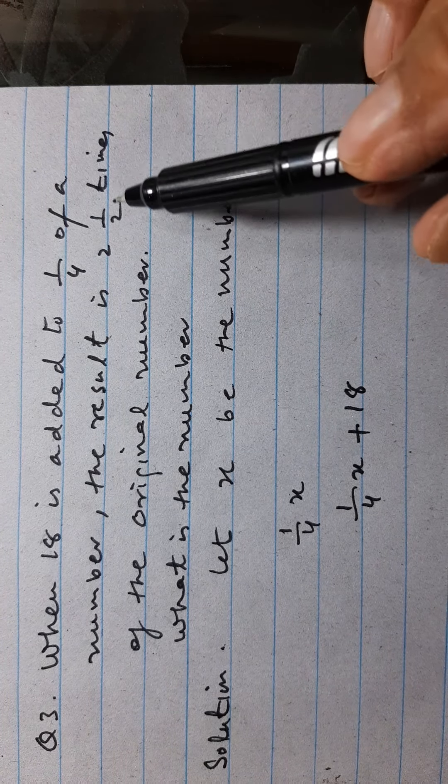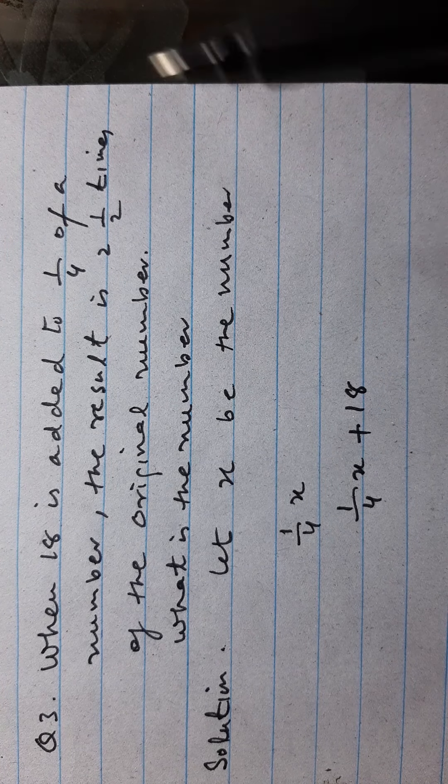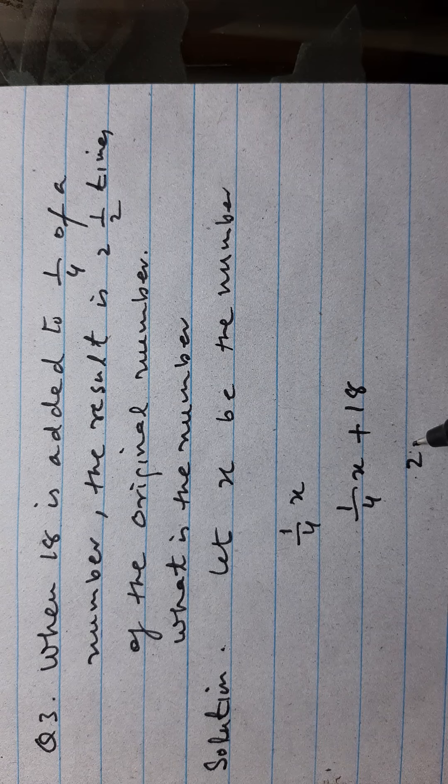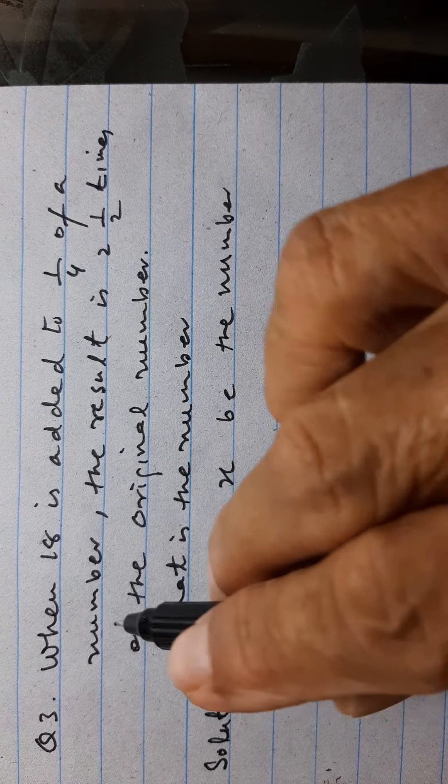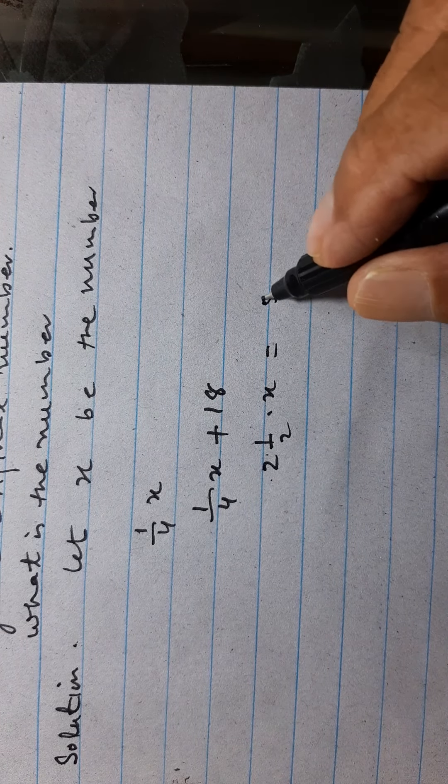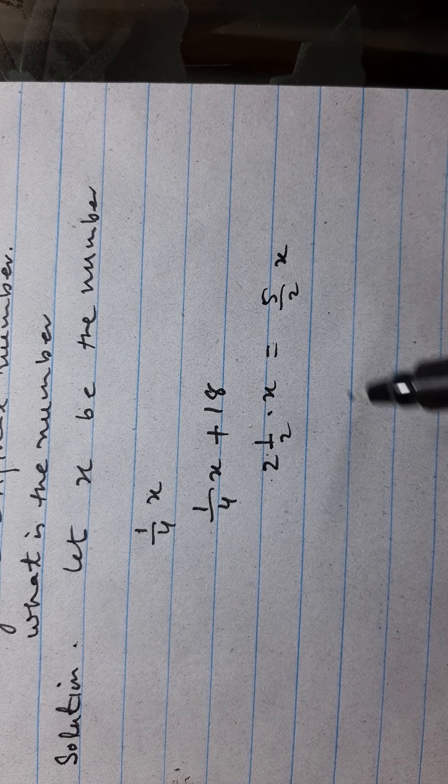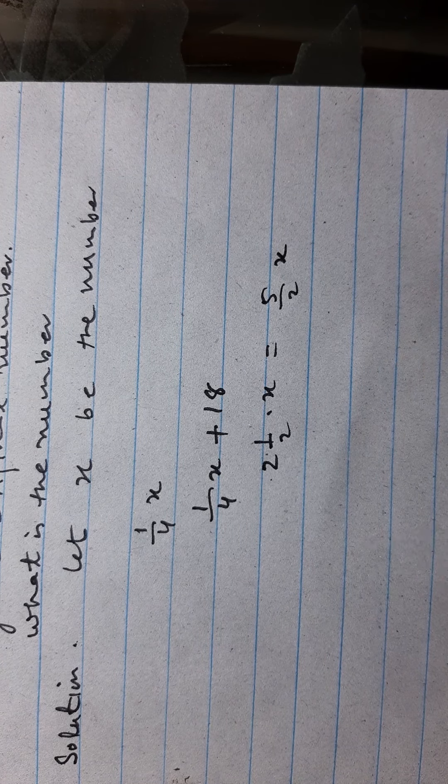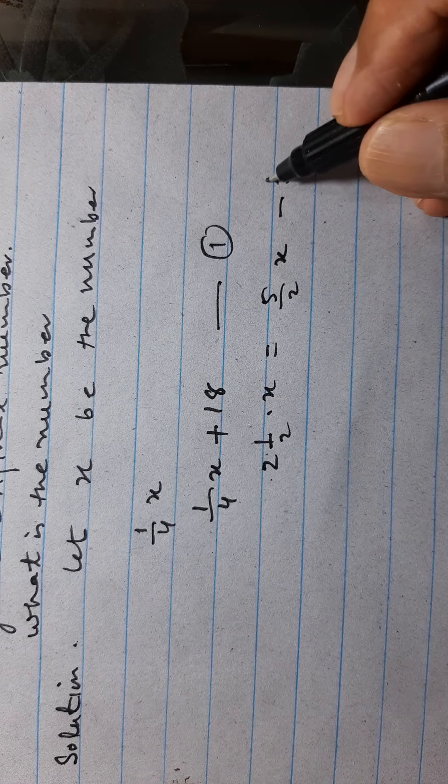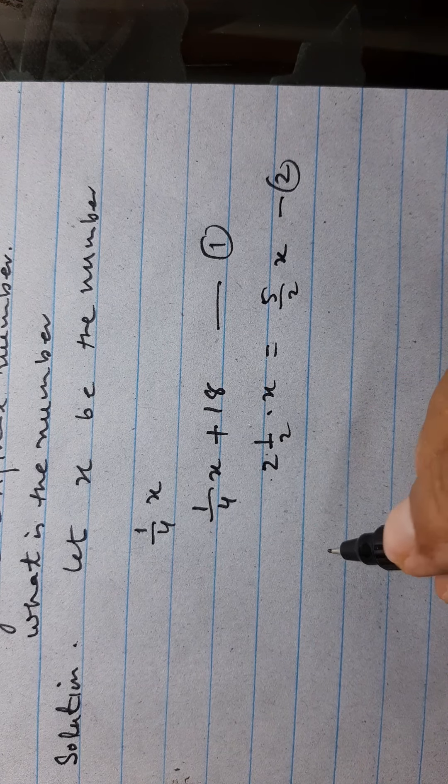And the result is two times of original number, the two times means two and a half times of original number. This is x, this is two-four and five upon two x, and this result is equal to this.